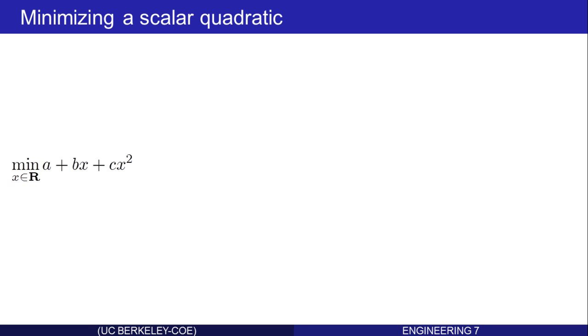Well, let's go over the cases. If b and c are both zero, then the function is just constant. It's the constant a, so that is the minimum. That looks like this. The graph of the function is a constant, independent of x.